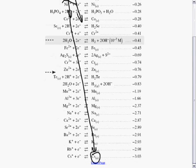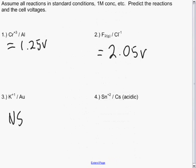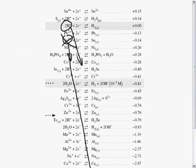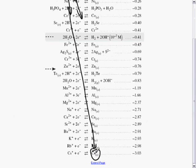So, 0 minus negative 3.03. This cell will have a voltage of 3.03 volts. And one electrode will create hydrogen gas. And another electrode will create cesium plus 1 ions.